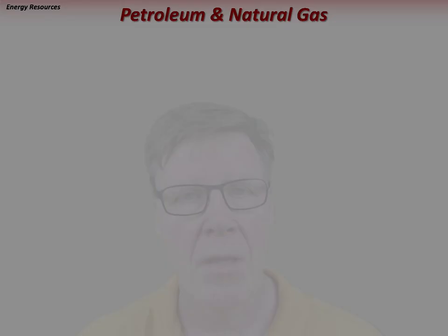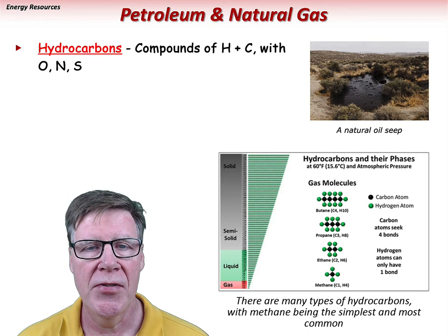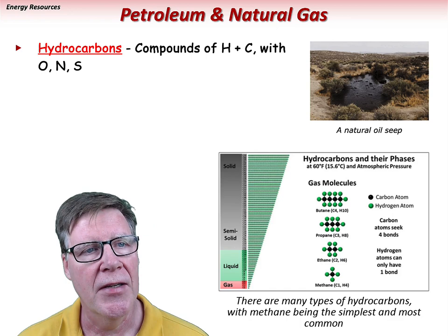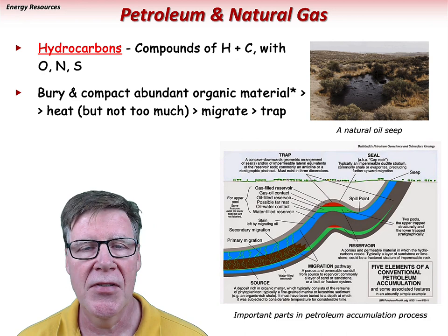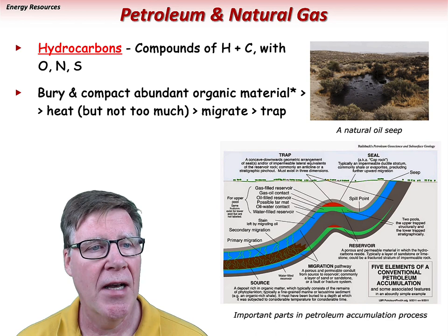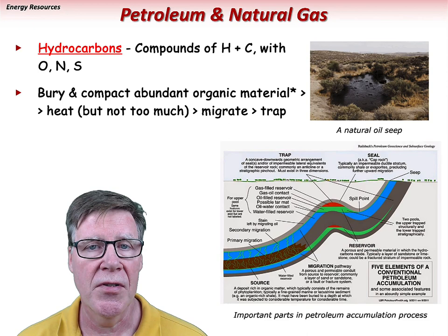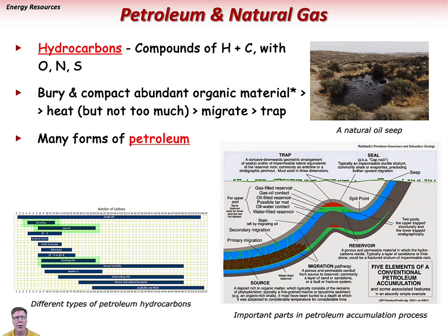Petroleum and natural gas are two other important fossil fuels. They are termed hydrocarbons, as they are compounds composed of hydrogen and carbon with varying amounts of oxygen, nitrogen, and sulfur. These deposits form from the burial, compaction, and distillation of organic material — heated, but not so much as to break down the hydrocarbon compounds. The resulting petroleum and natural gas migrate from the source rock through fractures or permeable rock until trapped in a reservoir. If not trapped, they may reach the surface and form a seep. Once extracted, crude oil is refined into many different types, from gasoline and diesel to heating oil and asphalt. Natural gas is mostly methane (CH4), and is commonly present above the petroleum layer in a hydrocarbon reservoir.